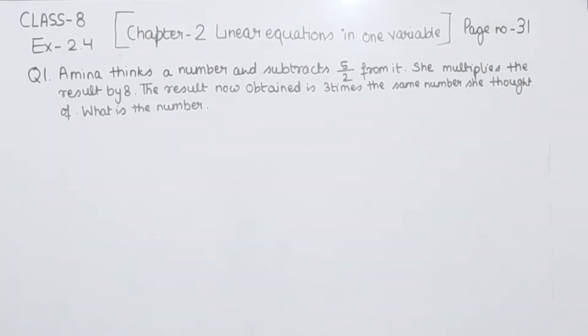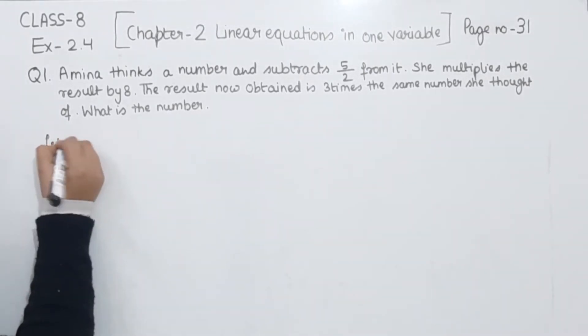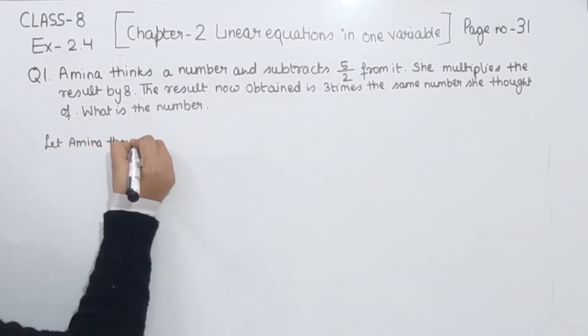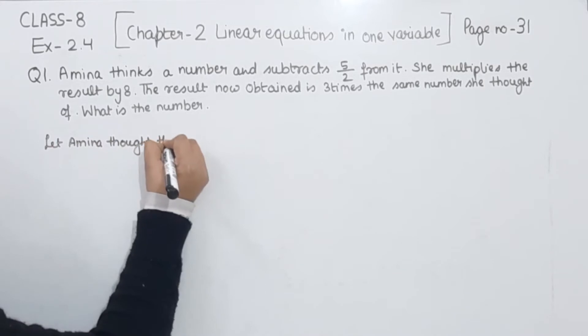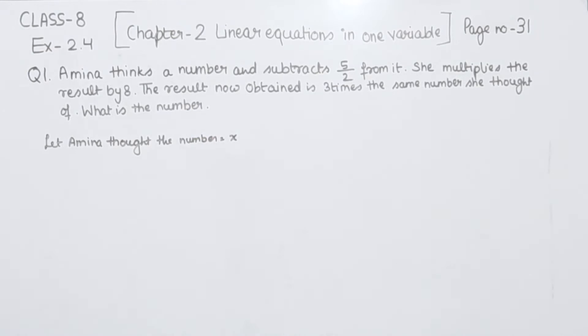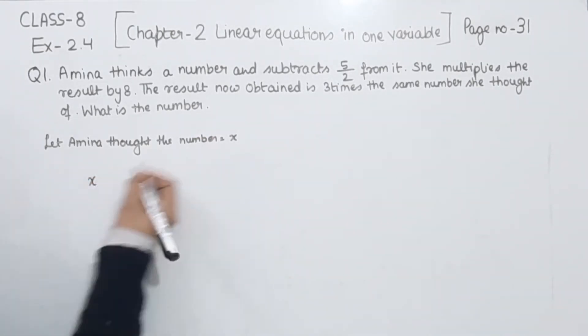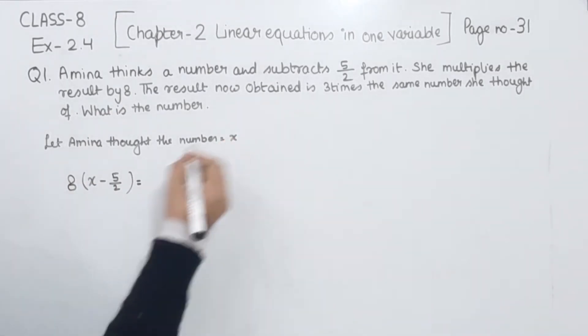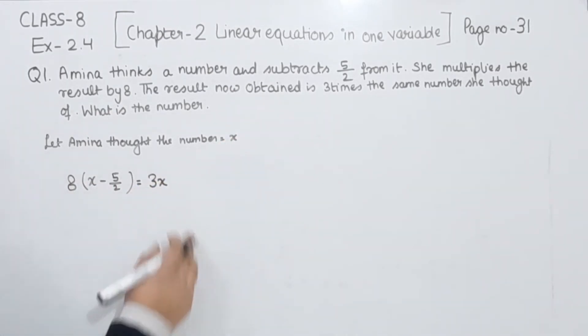So first of all, let Amina's thought number be x. Now this is the number. We have to subtract 5/2 from it, then we have to multiply this by 8, then the result will be 3 times the number she thought. So this is the equation we are having as per the question.